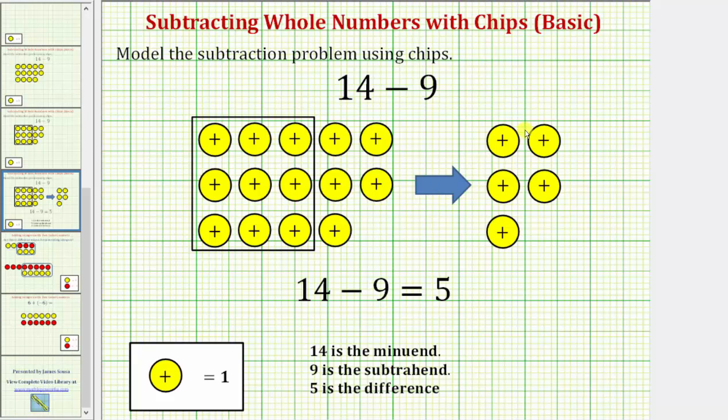We are left with 5 positive chips, which shows 14 minus 9 equals 5. I hope you found this helpful.